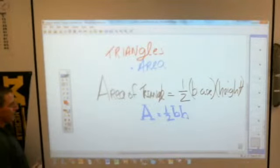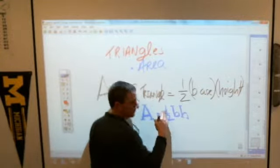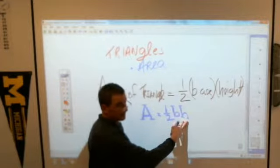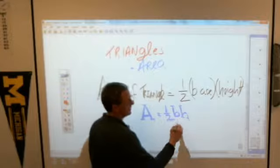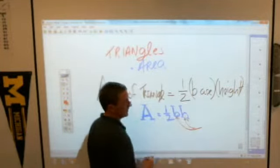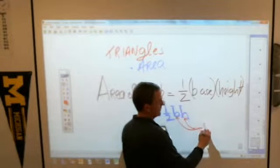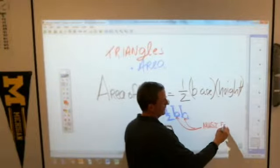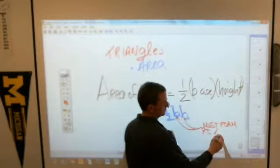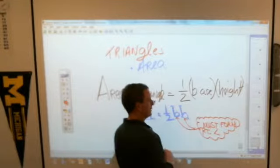Now, in math, a very important concept is, notice how this doesn't say one-half length times width. It is not one-half length times width, it's one-half base times height. And that is because, in math, when math people use base and height as those things you're multiplying together, those two things, they must form a right angle with each other. The base and the height have to form a right angle.